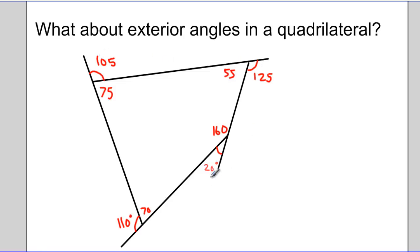So now that I've calculated all the exterior angles, I can add them all together: 105 plus 125 plus 20 plus 110. And when I add this all up, I end up with 360 degrees.